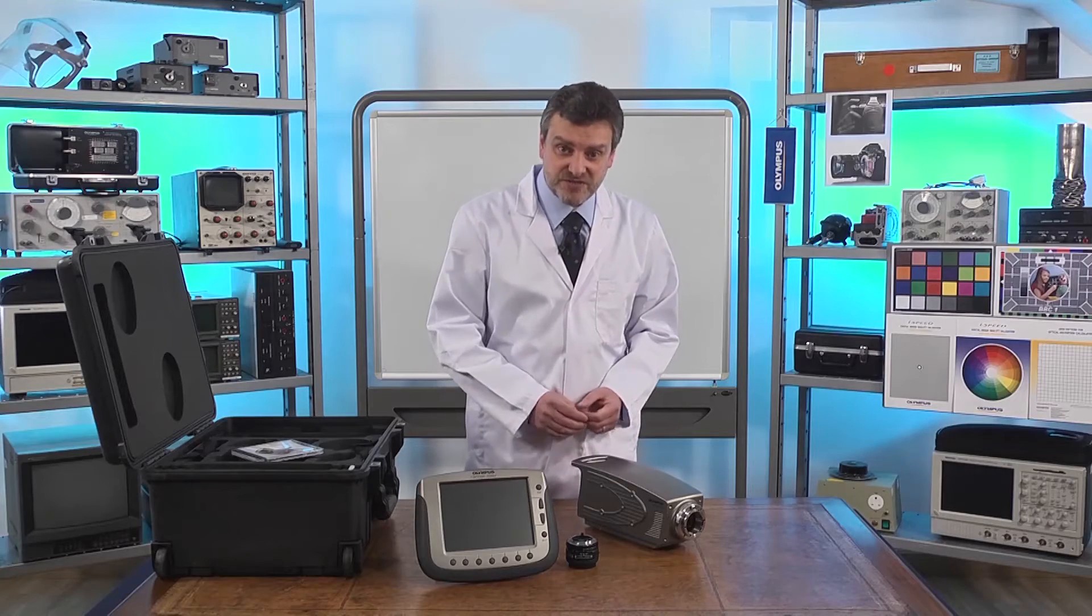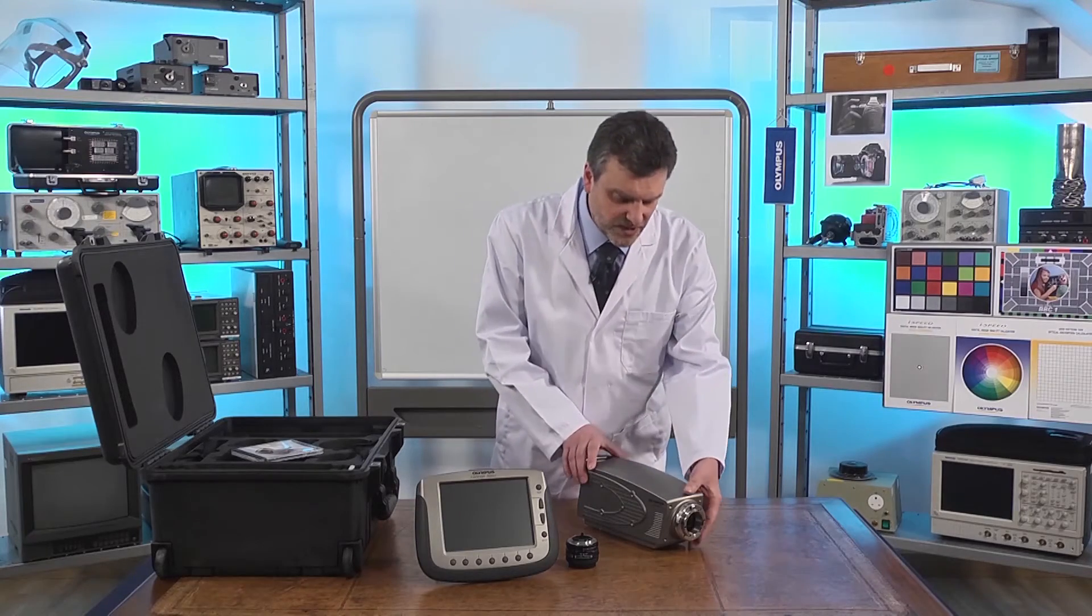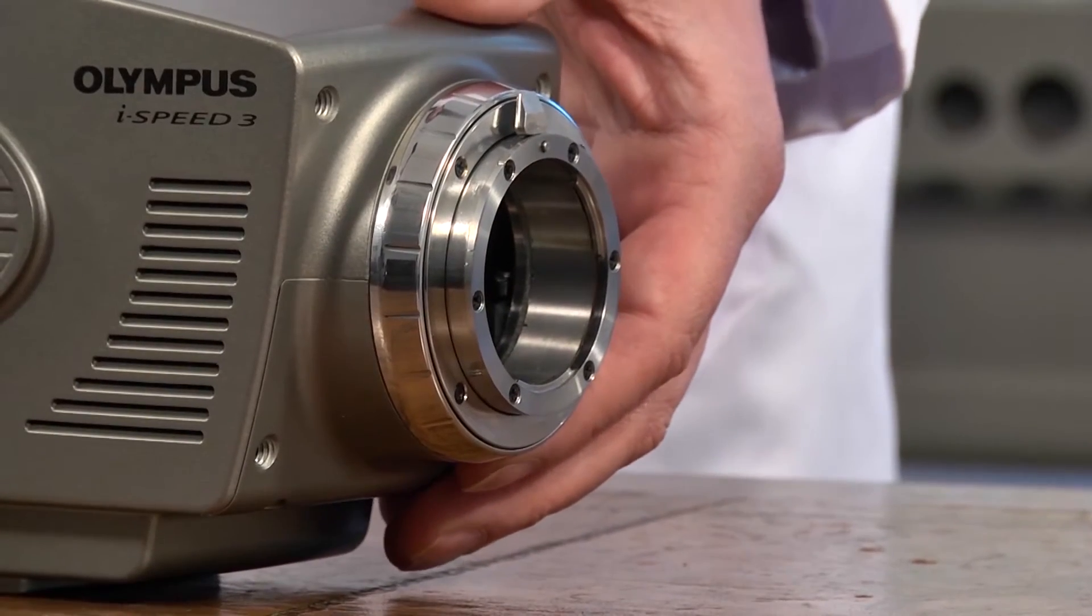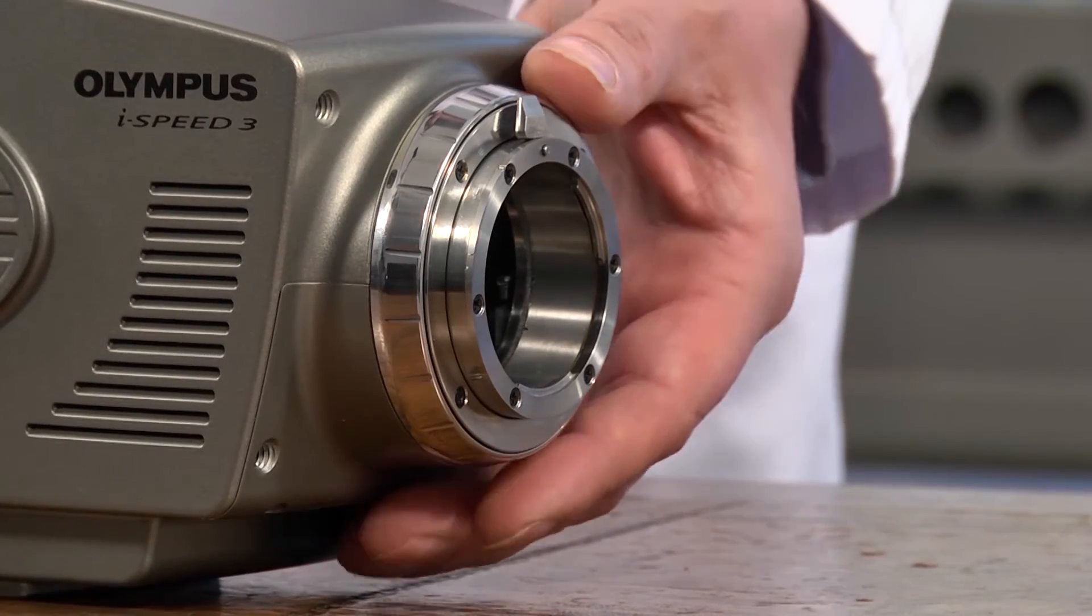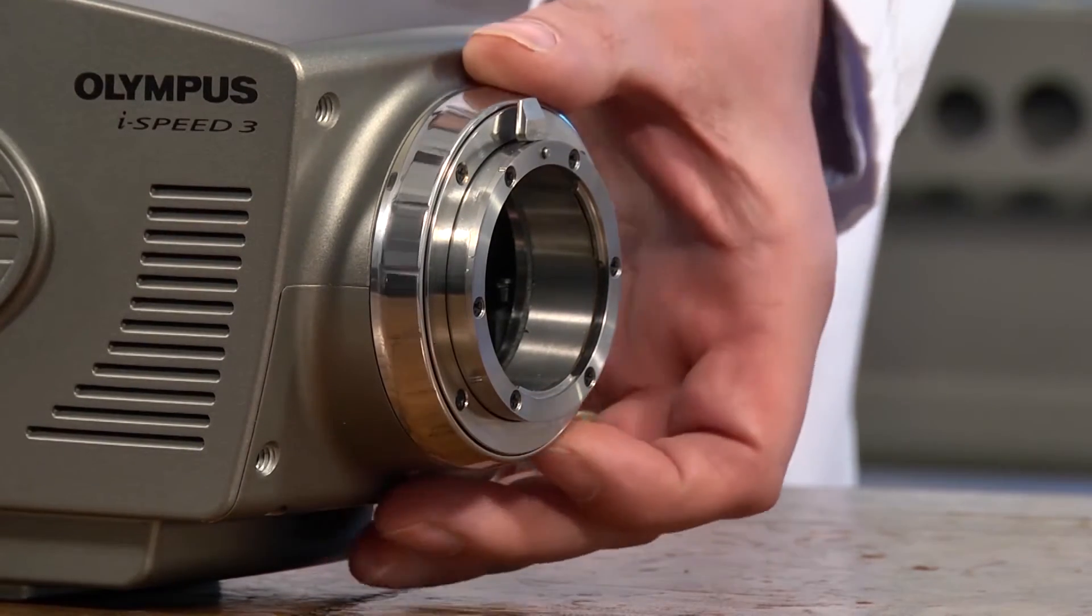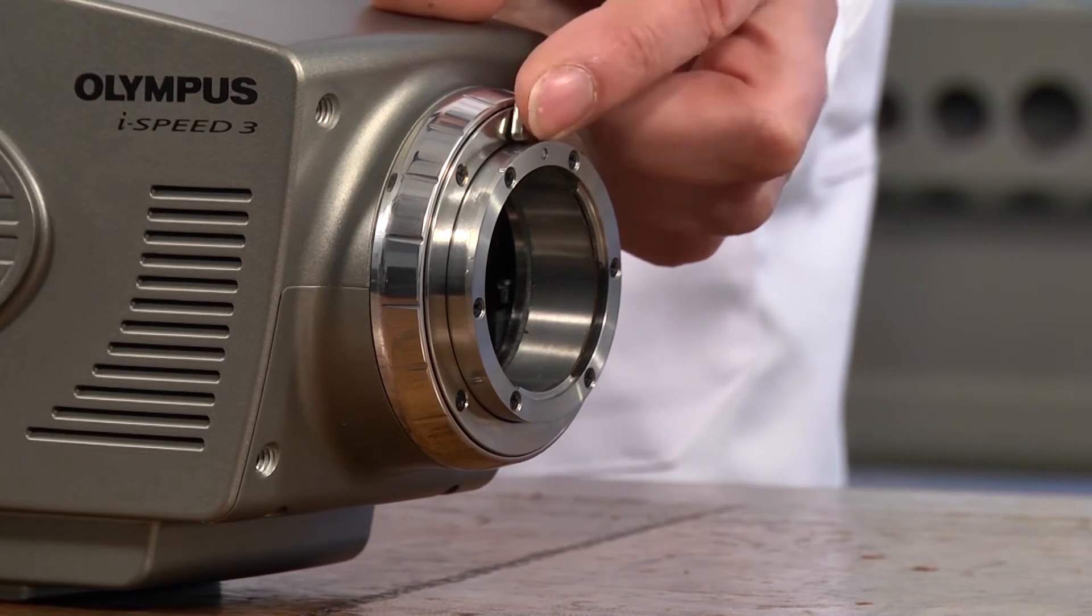So let's look at some of the features of the camera itself. At the front of the camera we have an F-mount lens mount with an adjustable back focus mechanism and also a lens release pip.